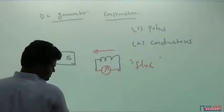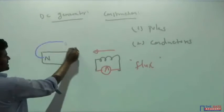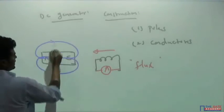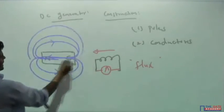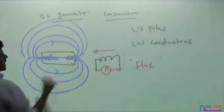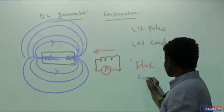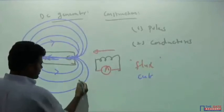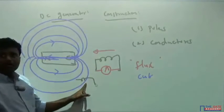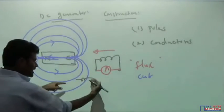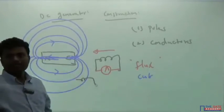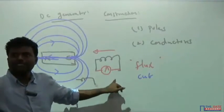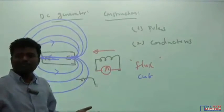The north and south poles have magnetic flux lines running from north to south on the outside and south to north on the inside. When the conductor comes and cuts these flux lines — for example, at one position it cuts only one flux line, and as it moves further it cuts two or three flux lines — a change in flux occurs. As the conductor moves toward or away from the magnetic field, the flux lines cut by the conductor keep changing, and the EMF is induced. This is the basic principle of a generator.